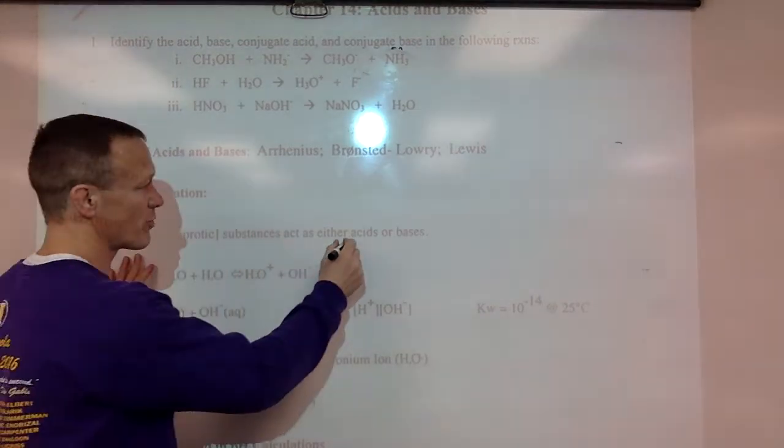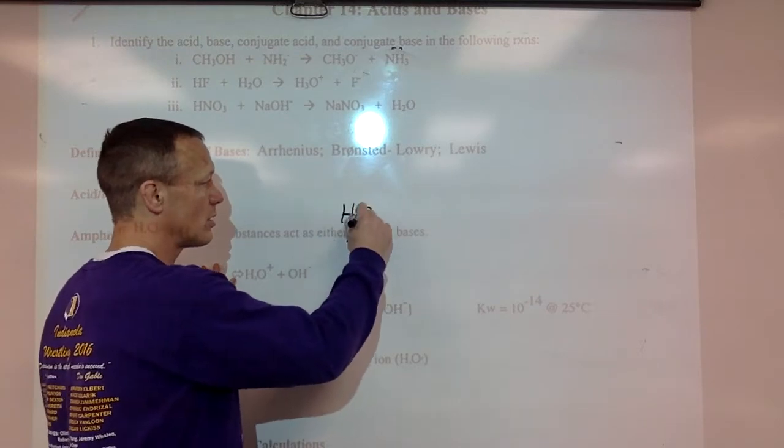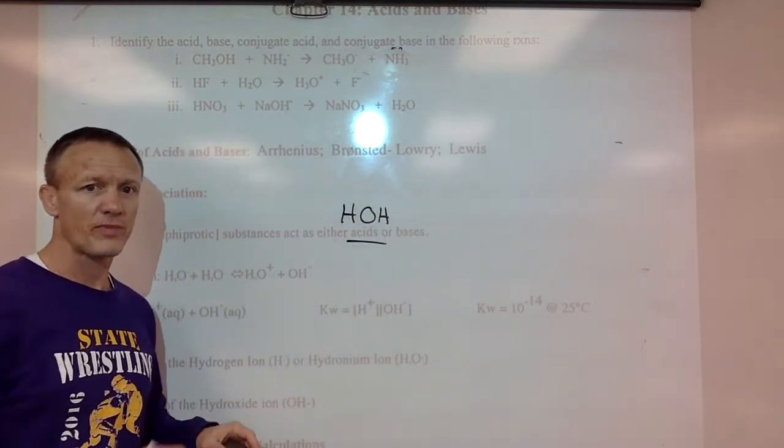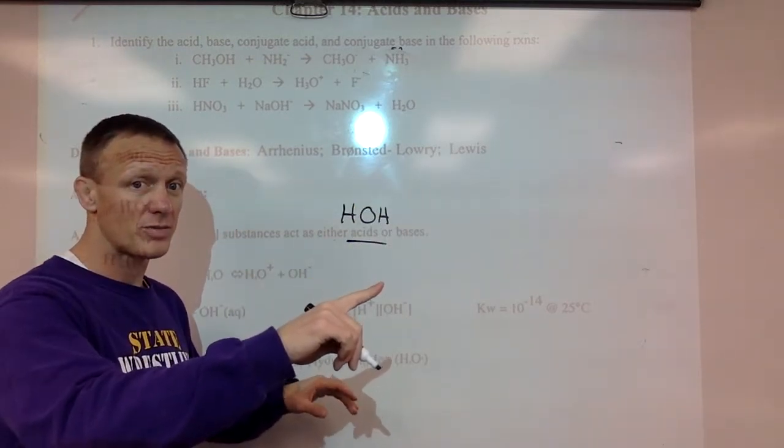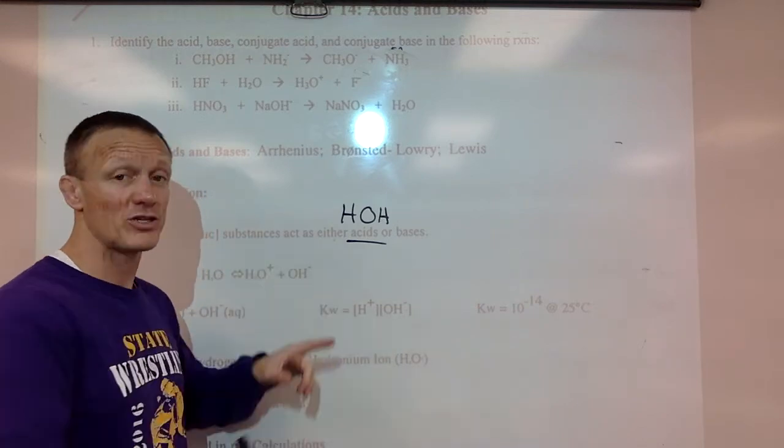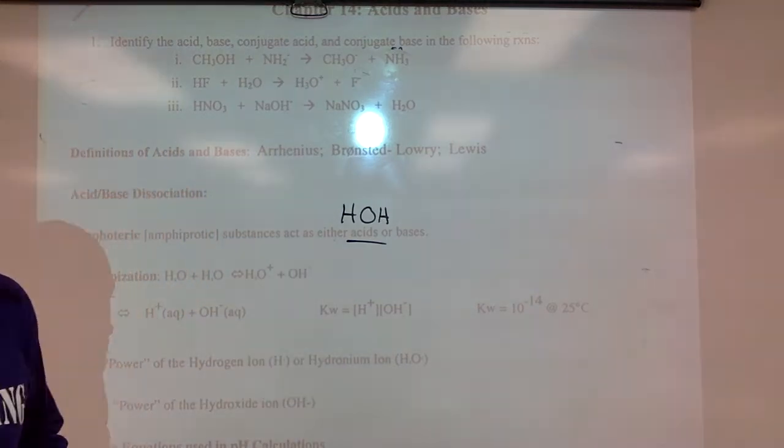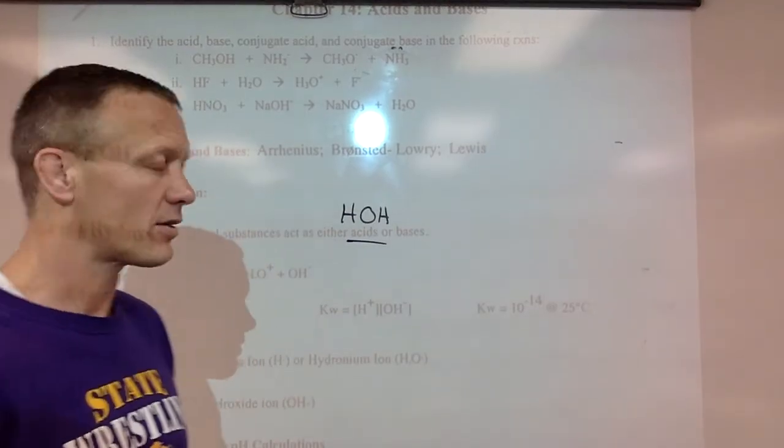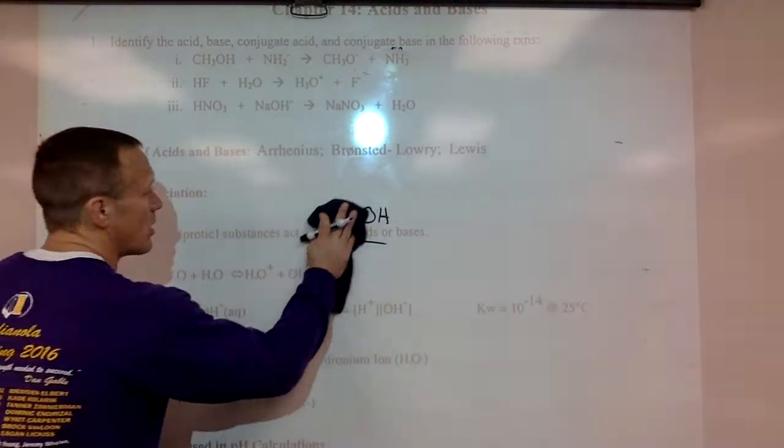Amphoteric just means things that can act as either an acid or base. For example, water has the ability to give a hydrogen, which means it acts as an acid, has the ability to accept hydrogen, which means it acts as a base. So water is called amphoteric, kind of like ambidextrous means you can throw with both hands.